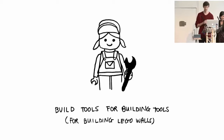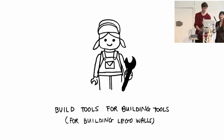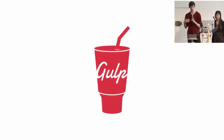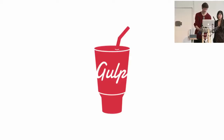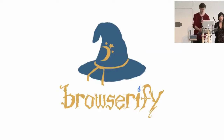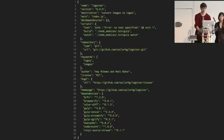Before we get started, let's talk about some of the build tools that we used to build tools to build Legos. We used Gulp, which is a streaming build tool. Basically it loops over all your files, does various operations to them, and transforms them into output files. We also used Browserify, which lets us use the CommonJS module format that Node uses, which allows us to use a lot of Node modules.